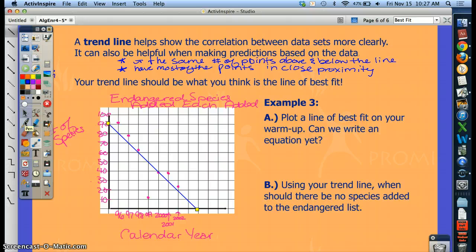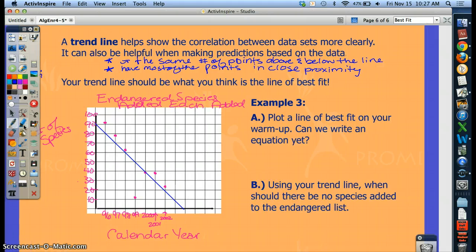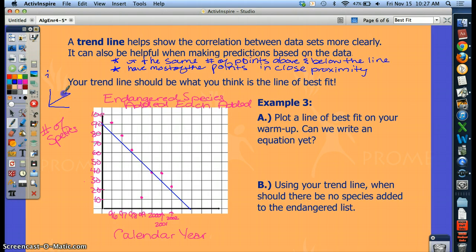In this case, it doesn't make sense for my trend line to have arrows because I can't have a negative number of species down here, and I can't have a negative number of years over here. But if your trend line was going to be a positive correlation and going on that way, you may want an arrow if it's showing that the trend continues. So keep that in mind. So for this example, my trend line does not make sense to go on, but another example it can.